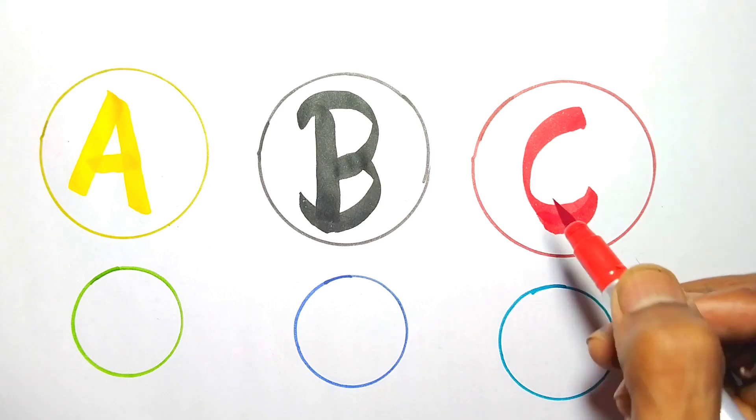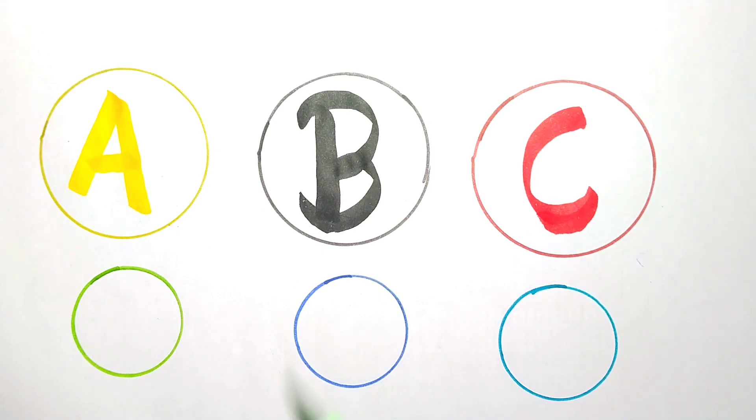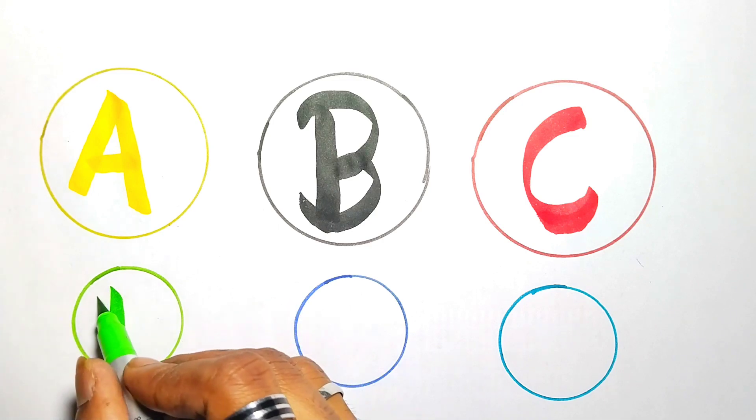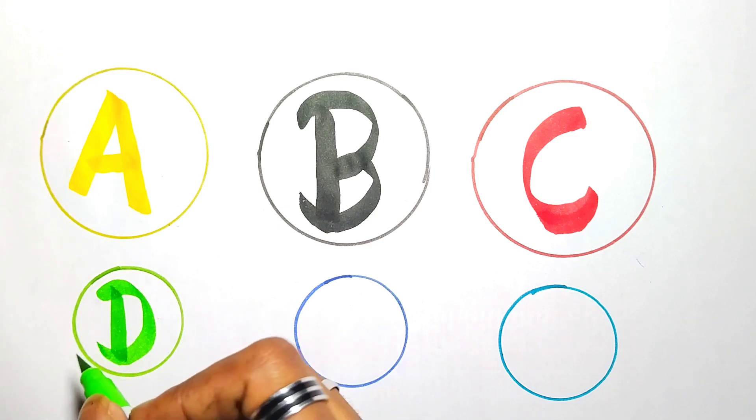C, C for Cat. Light green color D. D for Dog.